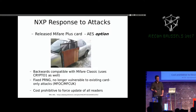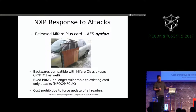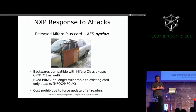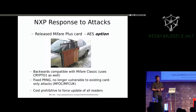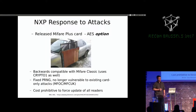NXP responded to these tools with the Mifare Plus card, which has an AES option. They wanted to allow infrastructure operators to update readers gradually while still supporting old cards, because it's too expensive to update everything at once. This means you may be using AES for some readers but still using the old CryptoOne library for older ones. They also fixed the pseudorandom number generator so it's no longer vulnerable to MFOC or MFCUK — so if you have a new card and it's not working, you can try all night and it won't work.